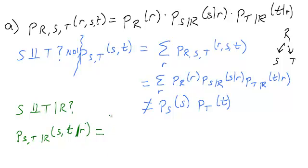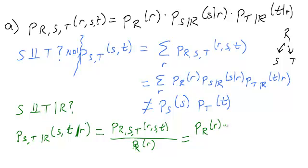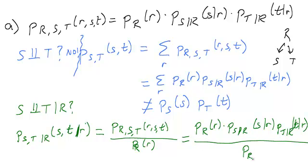So, PR. So this is PRST divided by PR of R. And when we write it out, we see that this just becomes PR times PS given R times PT given R divided by PR. We can see right away that these two are going to cancel, leaving us with exactly the two terms we want.